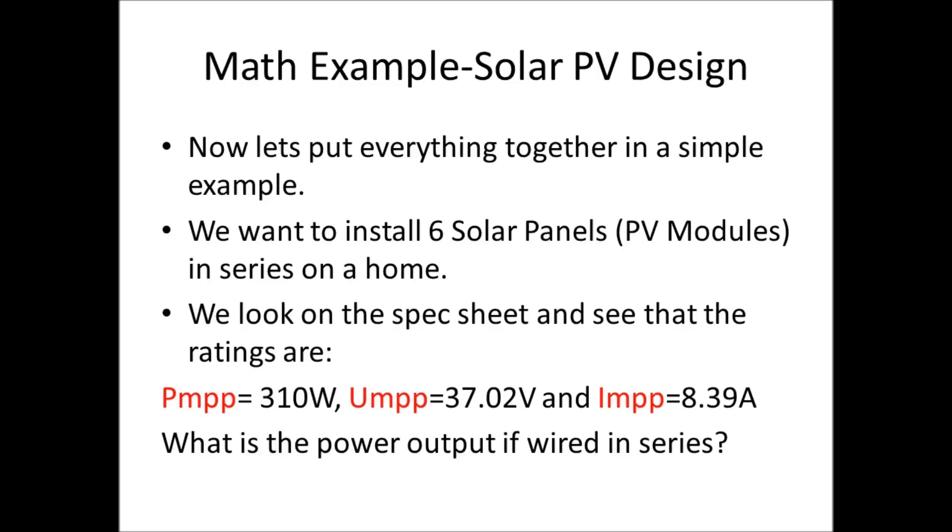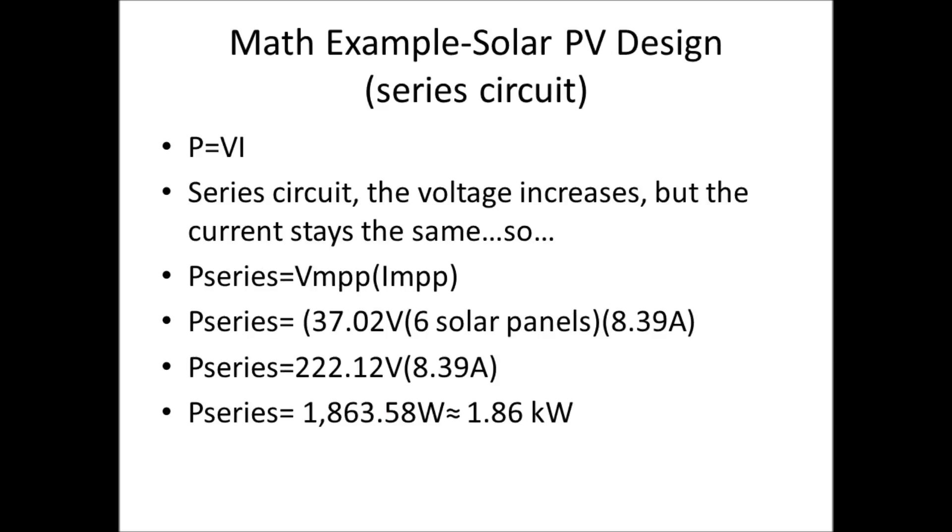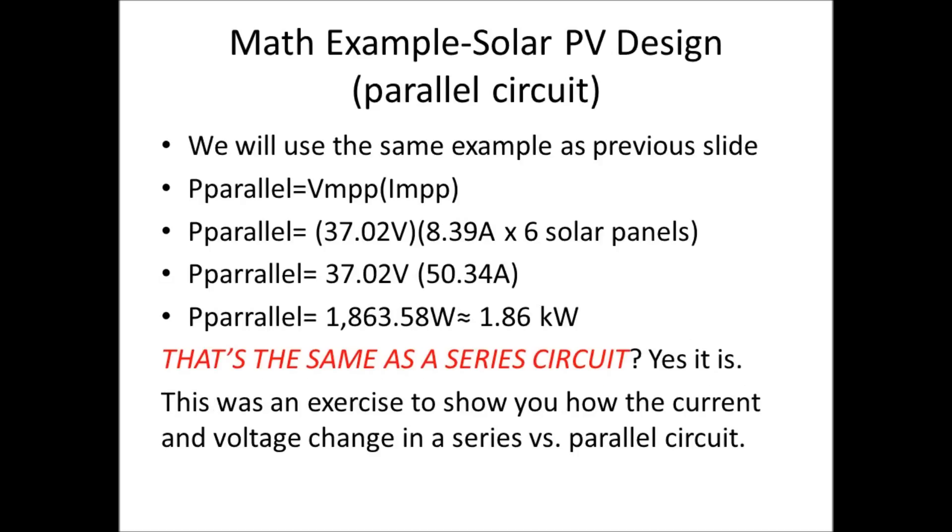Previous one was series, this one's for parallel. We're going to use the same figures, but we're going to wire the solar panels in parallel. So we're going to take 37.02, multiply that times the output of 8.39 amps times 6 solar panels.